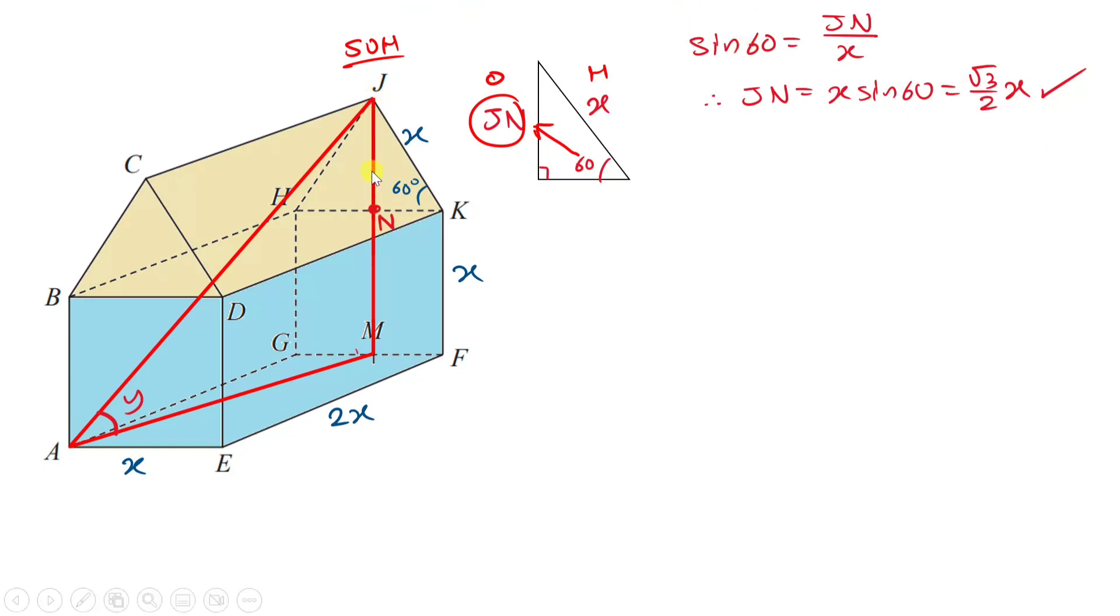Because we know that this length is now root 3 over 2 X, and we know that this long down from M to N is X, we can work out the length of JM. So that means we're going to have X plus our answer, which is JN, X plus root 3 over 2 X. Now, we don't leave our answer like that. We want to factorize X out. Remember, X is 1X. If you factorize it, it should be 1 plus root 3 over 2, close bracket, X.